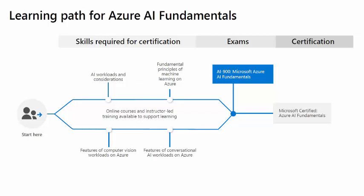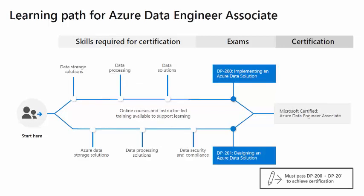The Azure Data Engineer Associate is considered the most fun of all the Azure certifications. It is equivalent to the Azure Solutions Expert certification and consists of two exams: DP-200 and DP-201. DP-200 covers implementation of Azure data technologies including storage solutions and stream analytics, while DP-201 focuses on design — knowing what solution architecture to recommend to a customer. Passing both earns the Azure Data Engineer Associate badge.